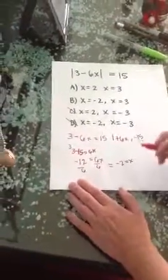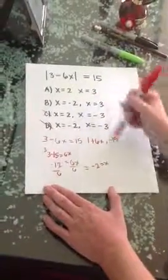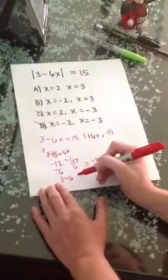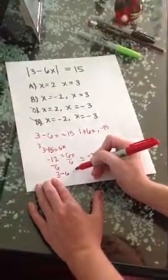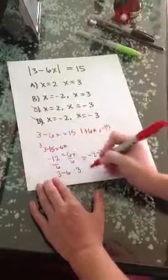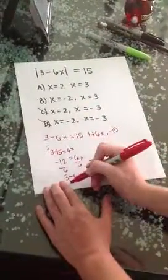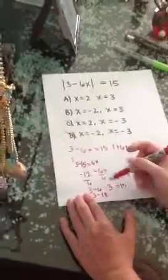Next, what we're going to do to solve for our last one, we're going to test 3. We're going to do 3 minus 6 times 3. 6 times 3 is 18, so you've got 3 minus 18 equals 15.